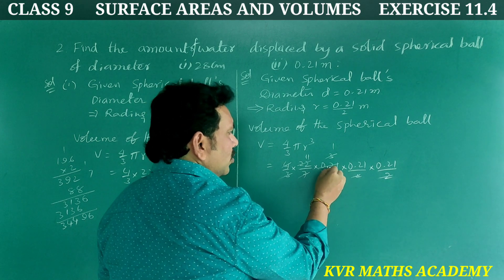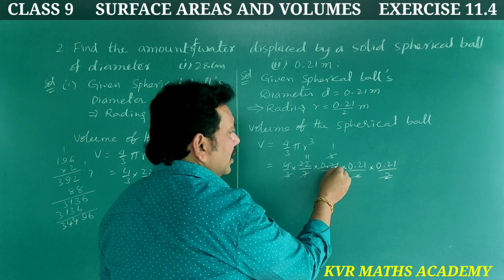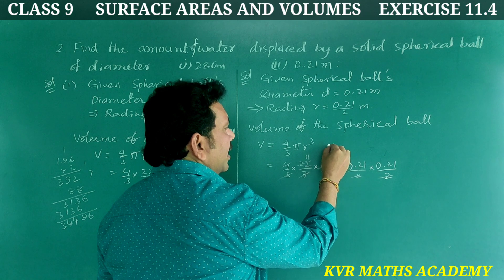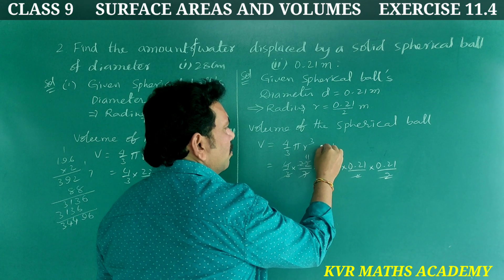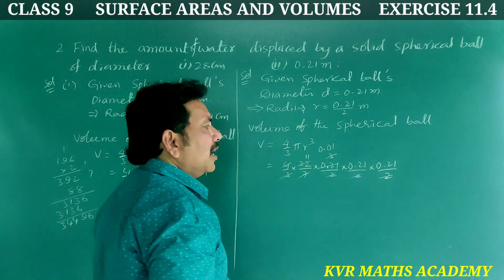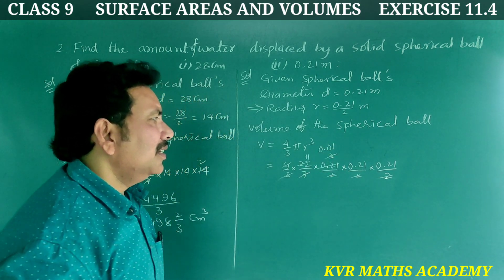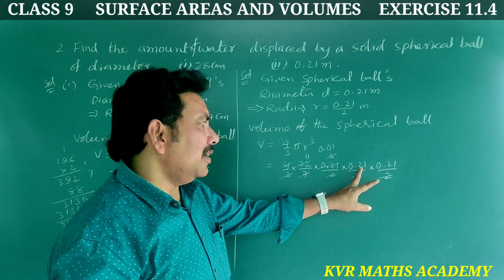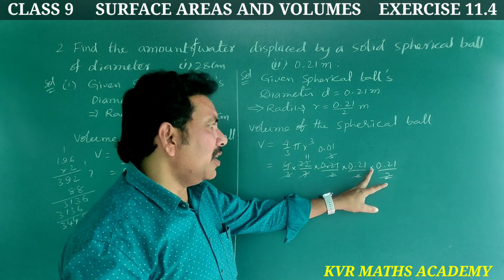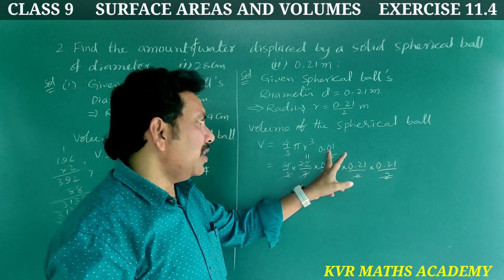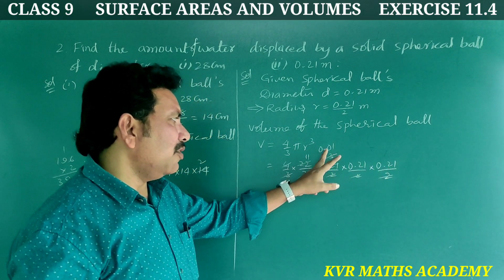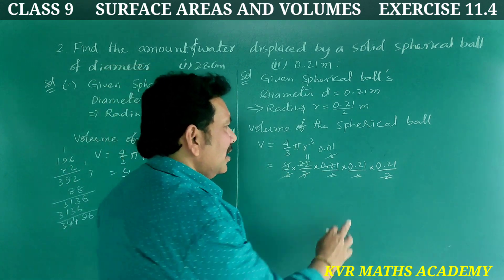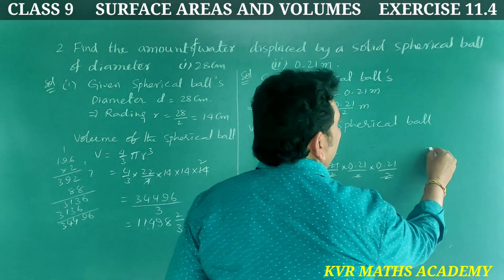There are two digits after the decimal in 0.21, so the point is at 0.01. Now we multiply 0.21 × 0.21 × 0.01 × 11. First, 21 × 21.